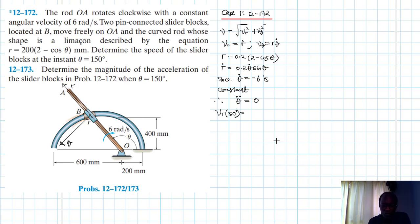So, Vr at 150° is 0.2 times negative 6 times sine 150. So this is just equal to minus 0.6 meters per second. Okay.